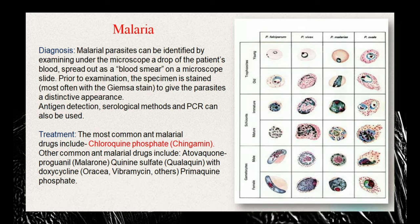The most common anti-malarial drugs include chloroquine phosphate, also known as chingamine, which is the drug of choice. Other anti-malarials include atovaquone, proguanil, quinine sulphate, doxycycline, and primaquine phosphate.